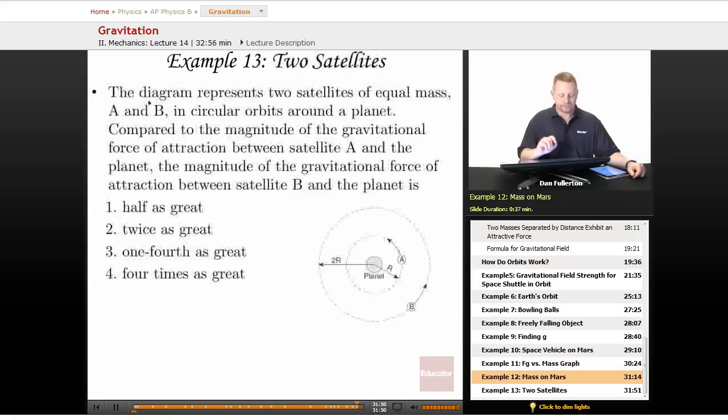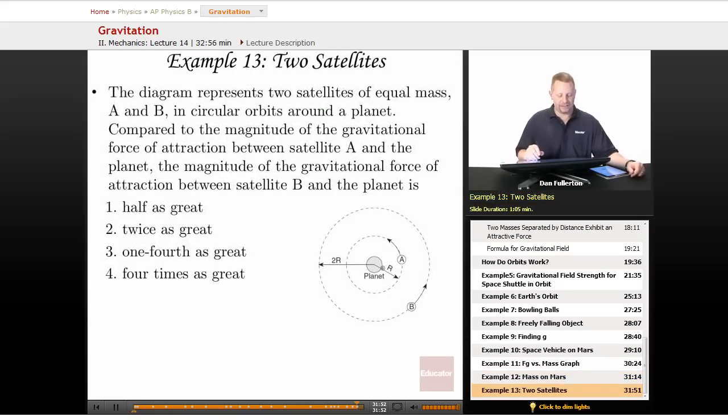One more. Here we have two satellites. The diagram shows the two satellites, both of equal mass, A and B, in circular orbits around a planet here. Compare the magnitude of the gravitational force of attraction between A and the planet. Find the magnitude of the gravitational force of attraction between B and the planet.